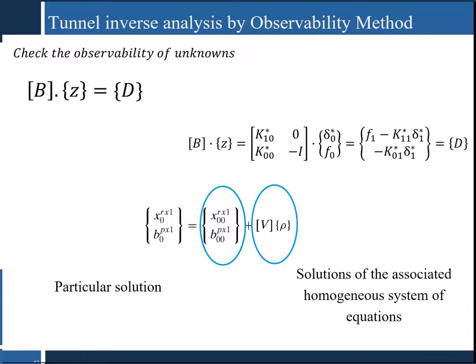At the end, the particular solution can be obtained by mathematical packages, and the second part is the solution of the homogeneous system of equations. Matrix B is the null space of the coefficient matrix. To check if the system has a solution, it is sufficient to check the null space of matrix B.